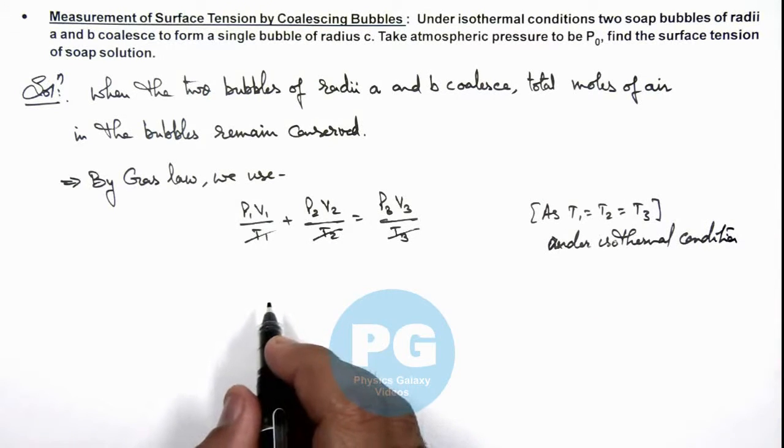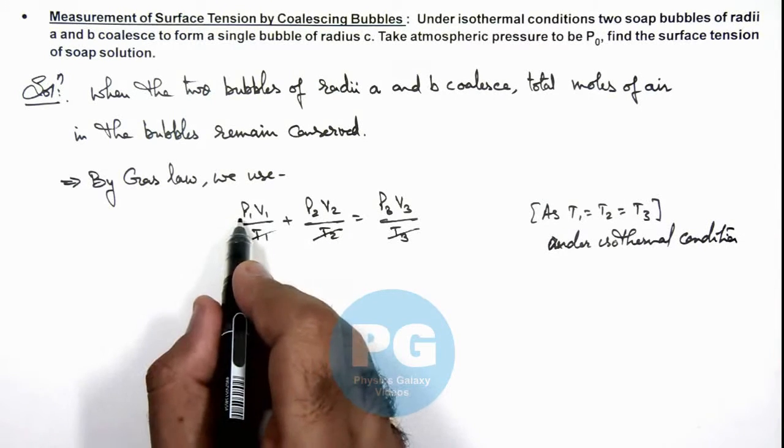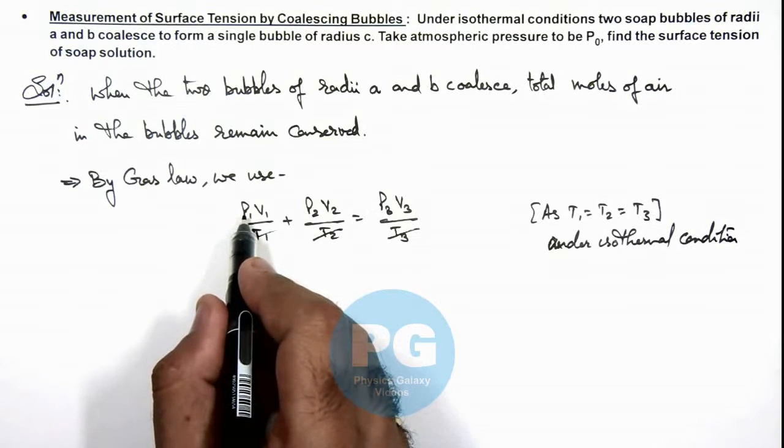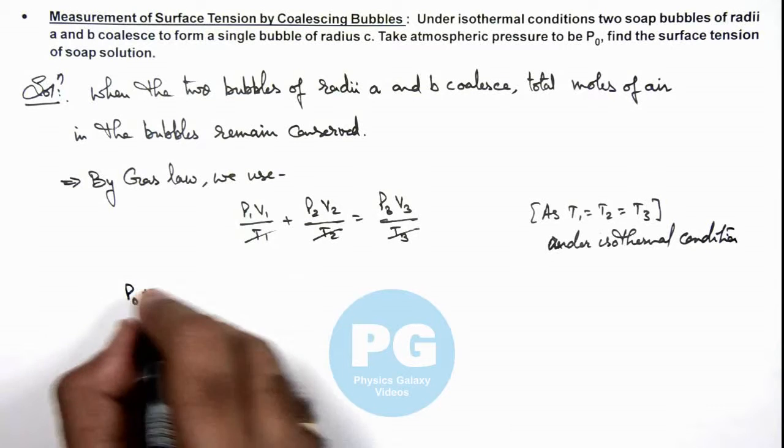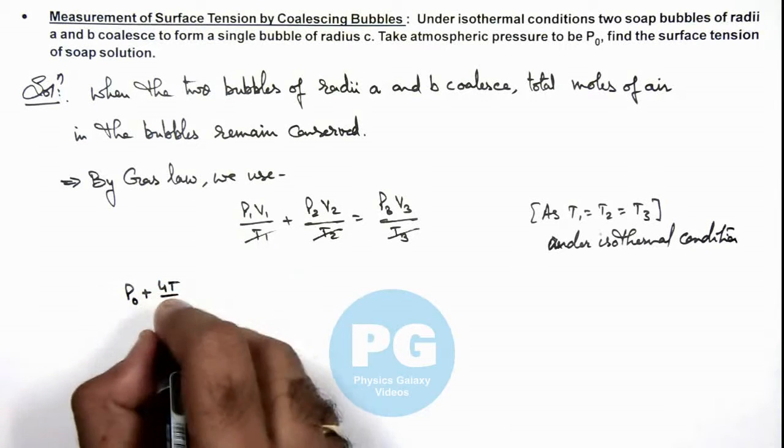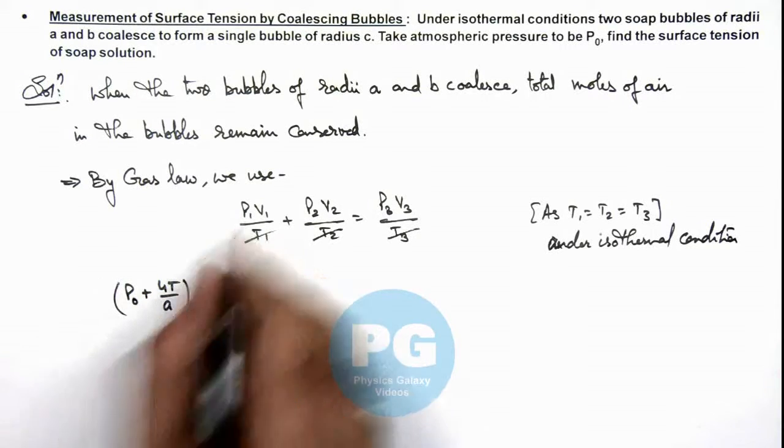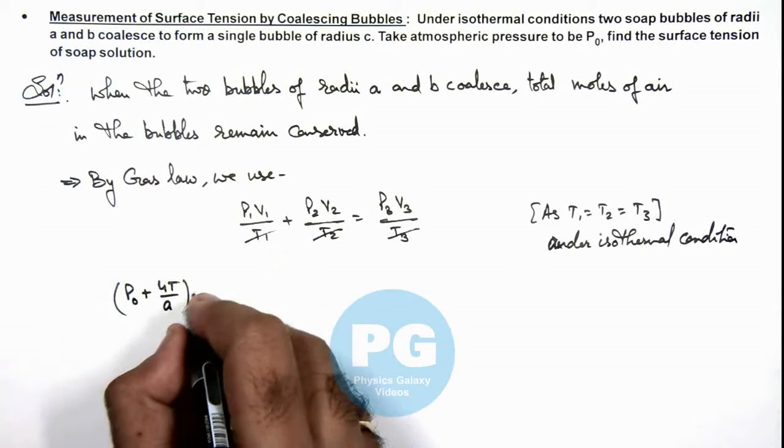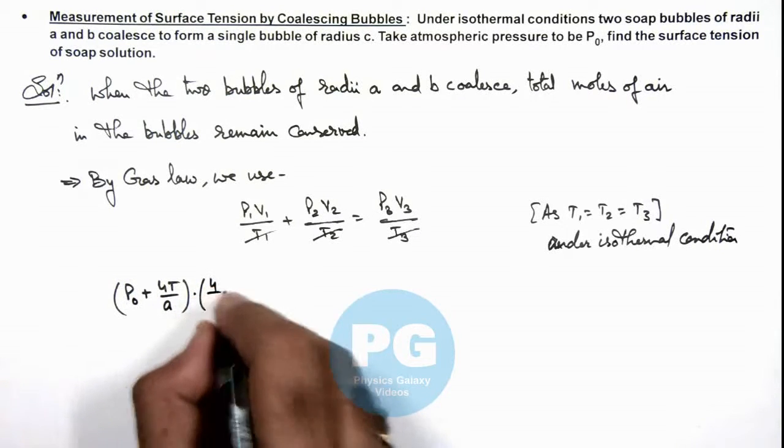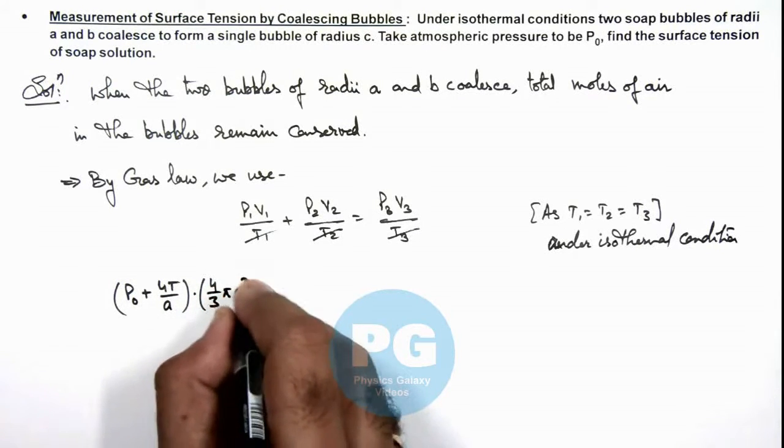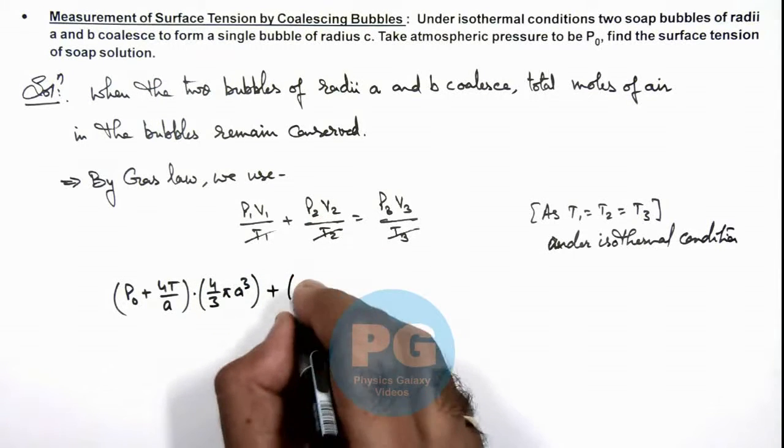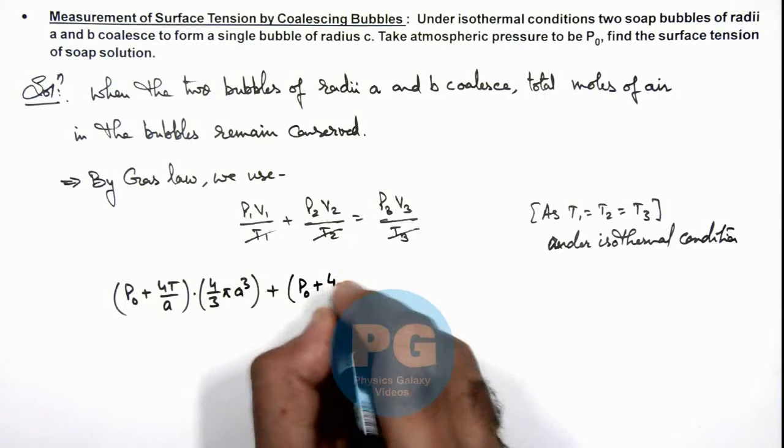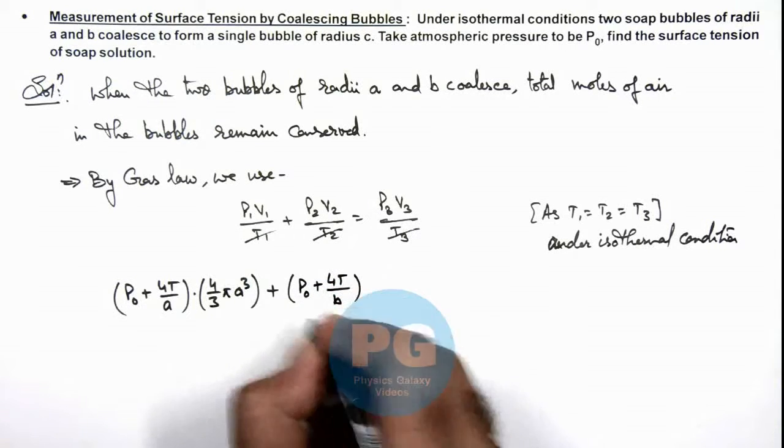So in this situation, we can write the initial pressure of the first bubble as P₀ + 4T/a, multiplied by its volume 4/3πa³, plus the initial pressure of the second bubble P₀ + 4T/b multiplied by volume 4/3πb³.